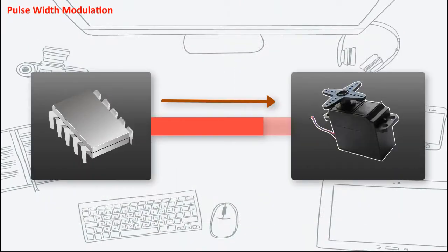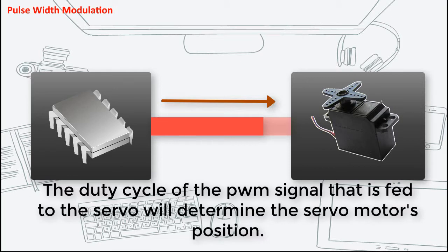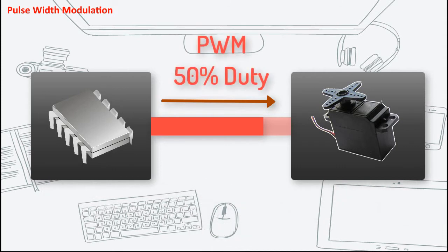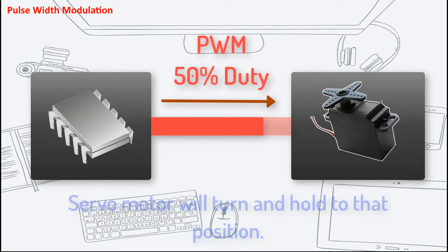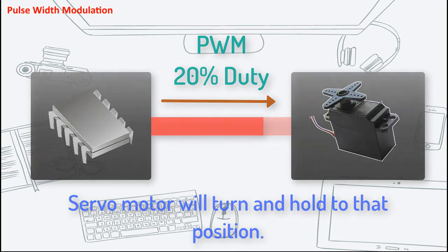An example of a real-world application of using PWM is by controlling a servo via a microcontroller. The duty cycle of the PWM signal fed to the servo will determine the servo motor's position. When we feed the servo motor a PWM signal with 50% duty, the motor will turn to a position and hold it as long as the same PWM signal is fed to the motor. In changing the duty cycle to 20%, the servo motor will turn to a new position. To make the servo motor go to your desired position, you will only need to know the specific PWM duty cycle to make it turn there.